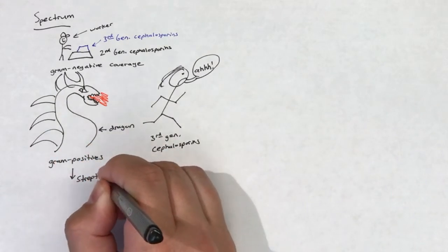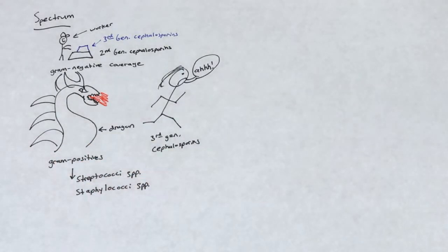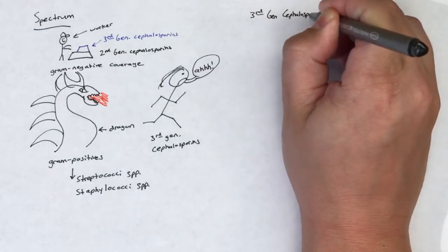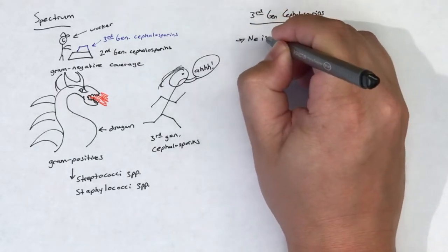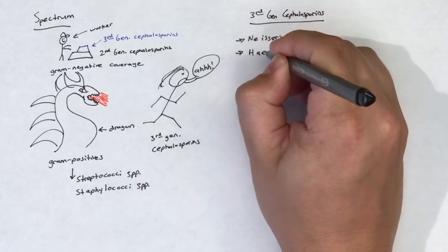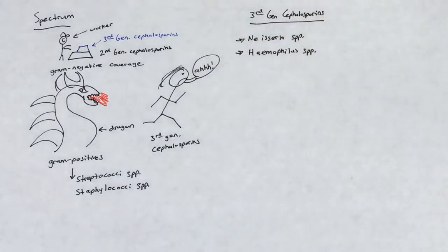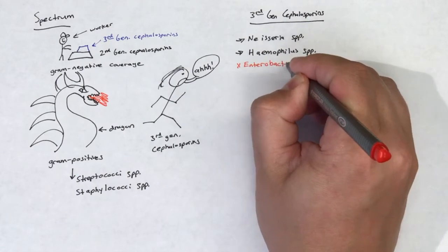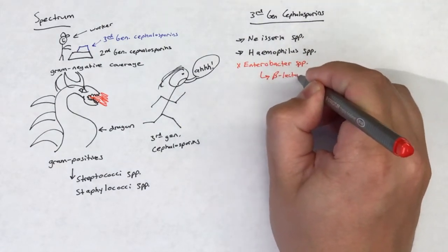Third-generation cephalosporins are active against beta-lactamase producing Neisseria species and Haemophilus species. However, they are not reliable against Enterobacter species due to their constitutive expression of beta-lactamase.